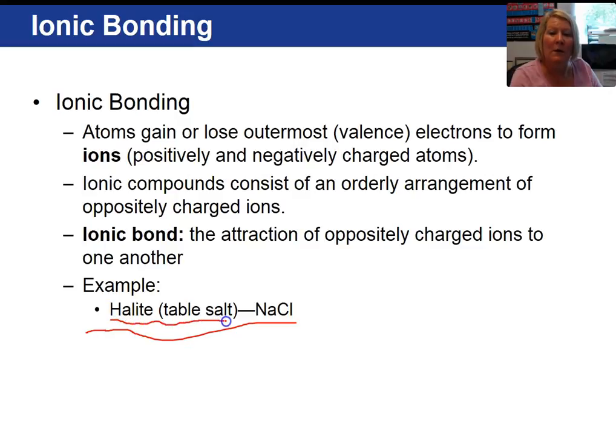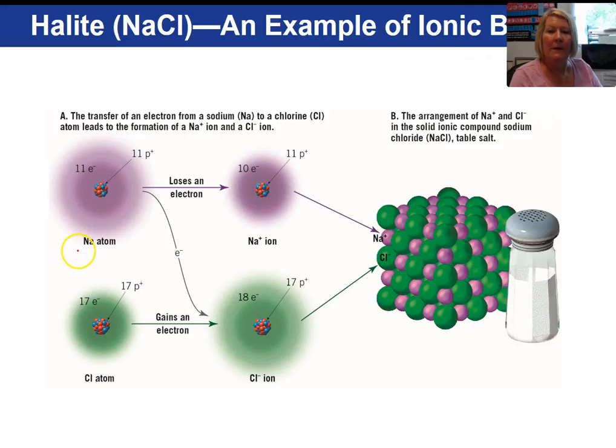If you look at the periodic table, you will see that sodium has 11 electrons and 11 protons. Chlorine has 17 electrons and 17 protons. Now with sodium, there is only one electron in the outer shell. So the tendency of that electron is to be transferred. And that's exactly what happens. So when sodium loses an electron...